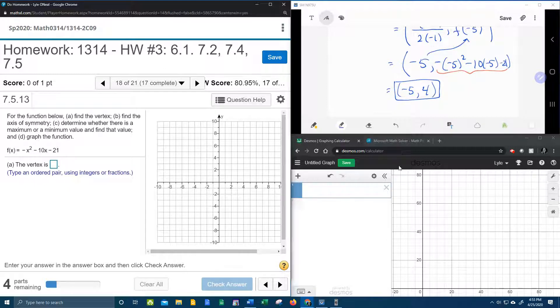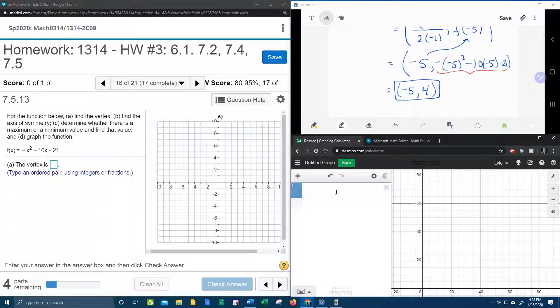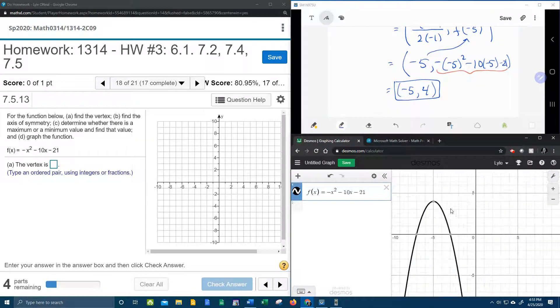Now what I'd like to do is verify that down here with Desmos. So we're going to put in our function f(x) equals negative x squared minus 10x minus 21. And if I re-center that, you're going to see that our vertex is at negative 5, 4, which verifies the work. So this is a graphical representation of what we did algebraically up here.